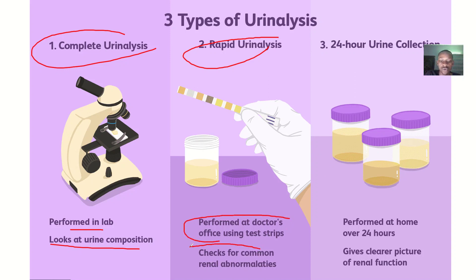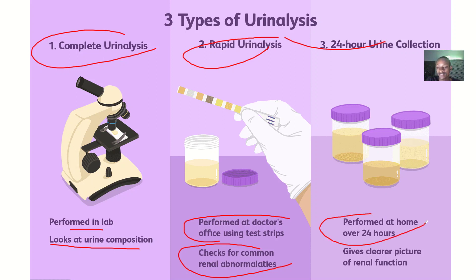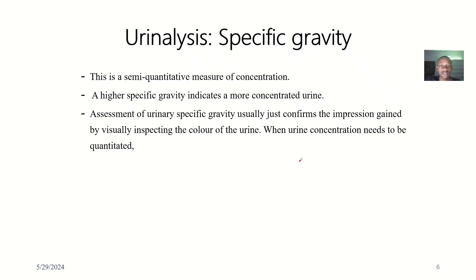The rapid urinalysis is performed at the doctor's office using urine test strips and checks for common renal abnormalities. Then we have the 24-hour urine collection, which is performed at home over 24 hours. This gives a clearer picture of renal function, because urine is collected over 24 hours and if there's any problem, it should be detected.